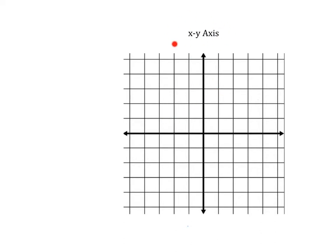All of our graphing is going to occur on what's called an XY axis. This horizontal line we call the x-axis, which means that vertical line would be called the y-axis. This XY axis allows us to show graphically two different values: an x value and a y value.